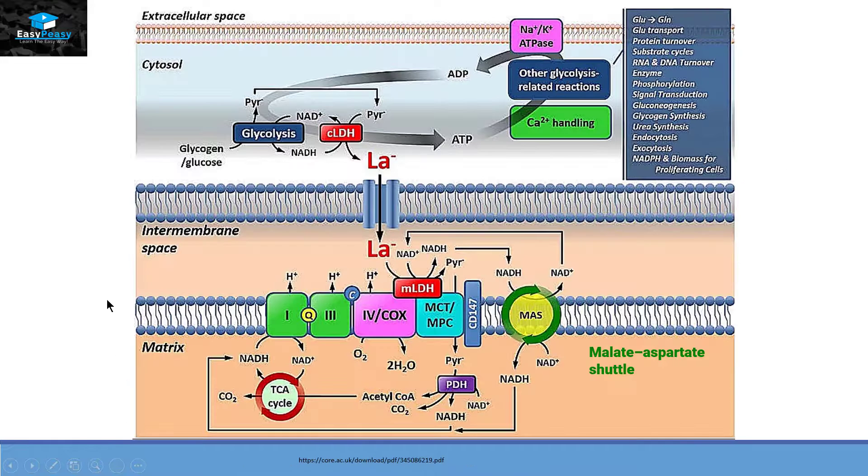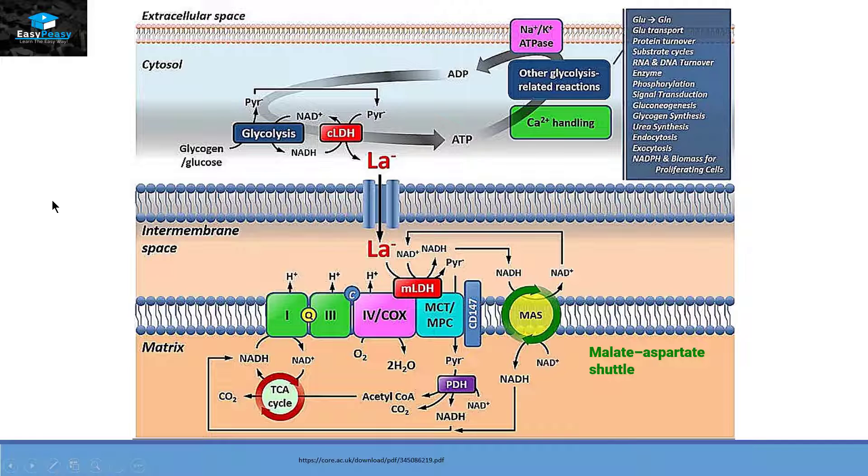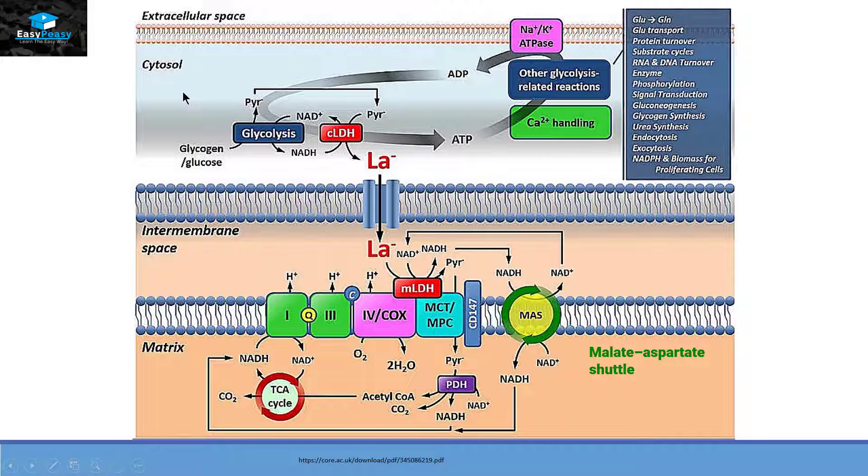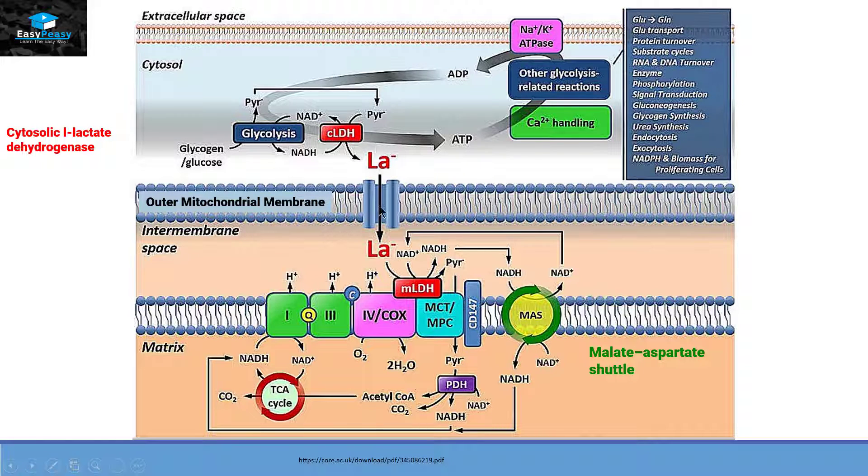Now the process of lactate going back into aerobic respiration will be discussed. So this is a normal cell with the cell membrane, cytoplasm, and mitochondria. Inside the cytosol glycolysis occurs and then with the help of lactate dehydrogenase it converts into lactate. Now this lactate will enter from the porin of the outer mitochondrial membrane inside the intermembrane space.